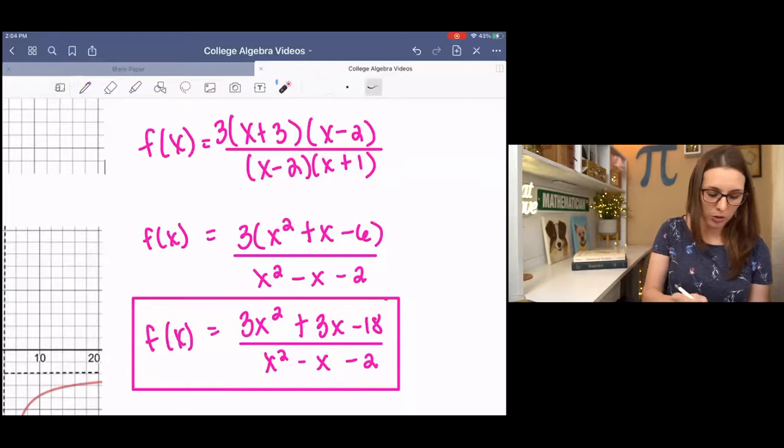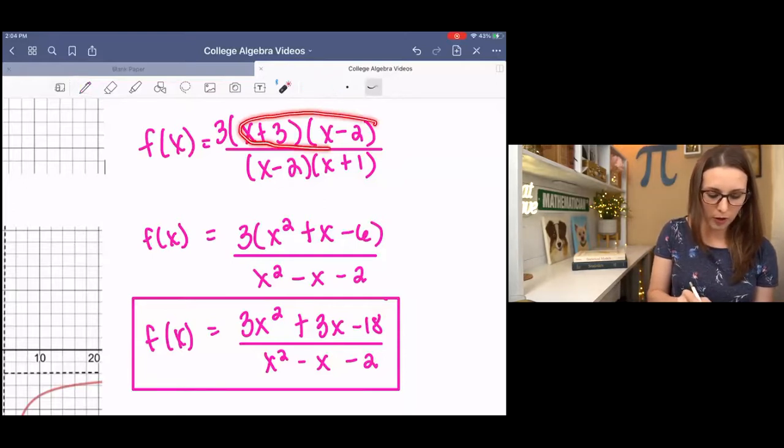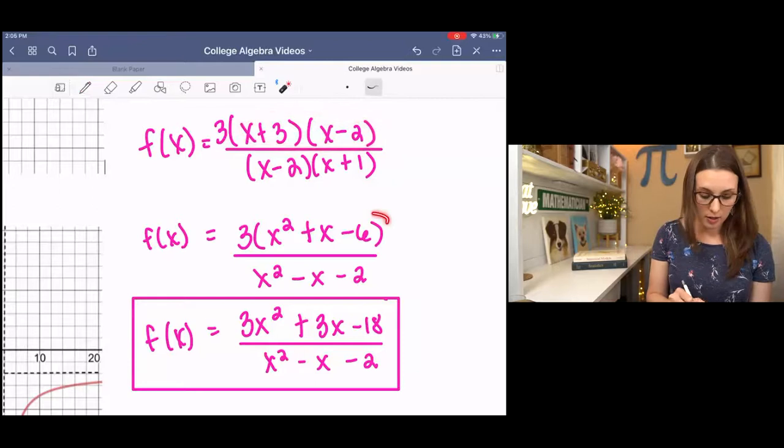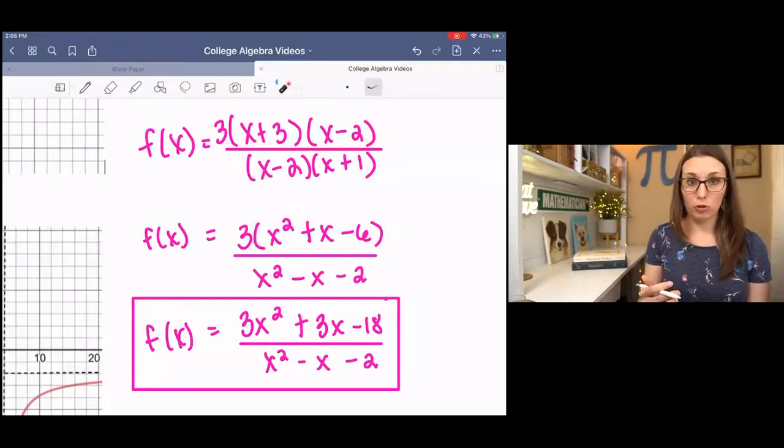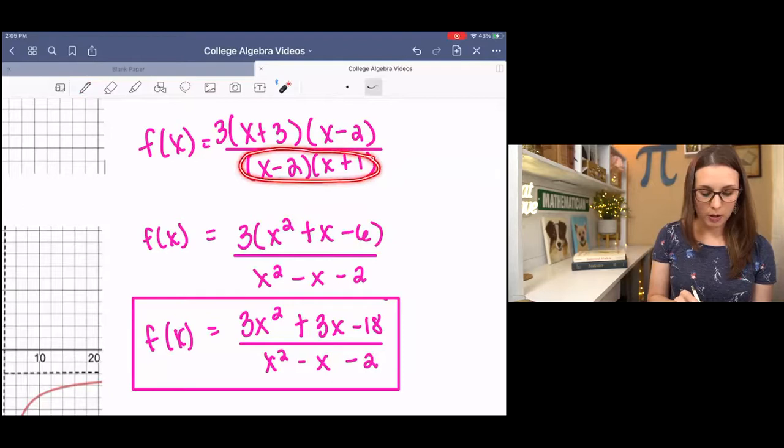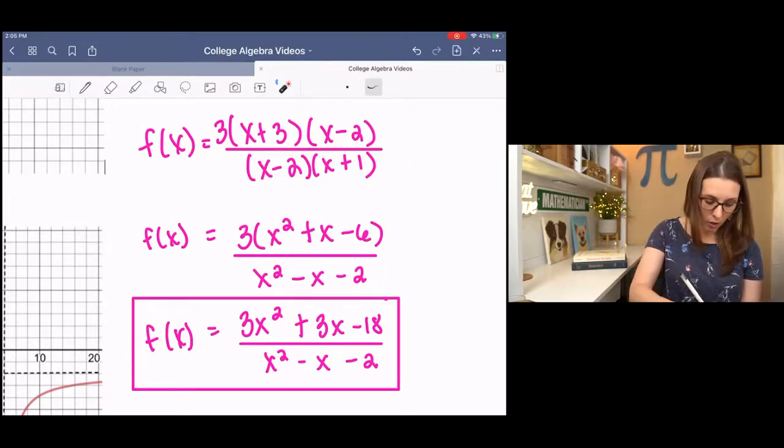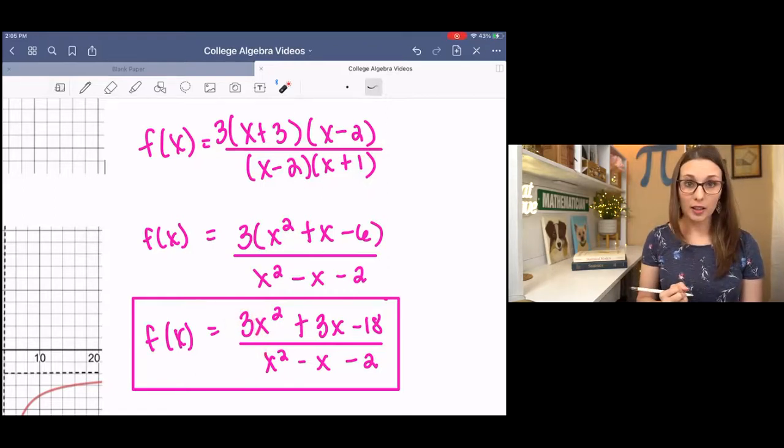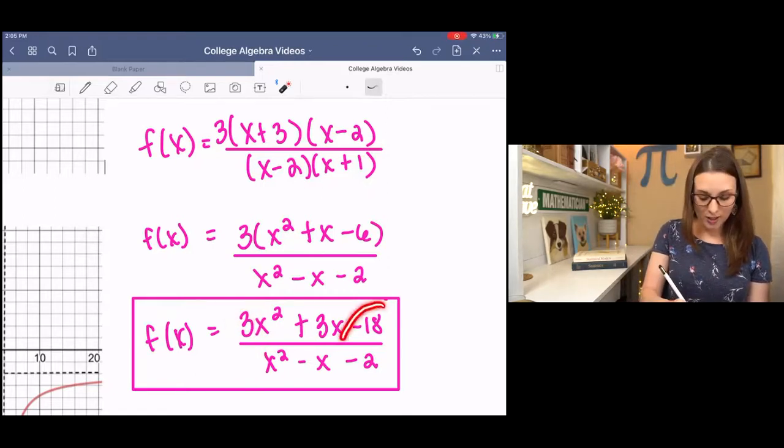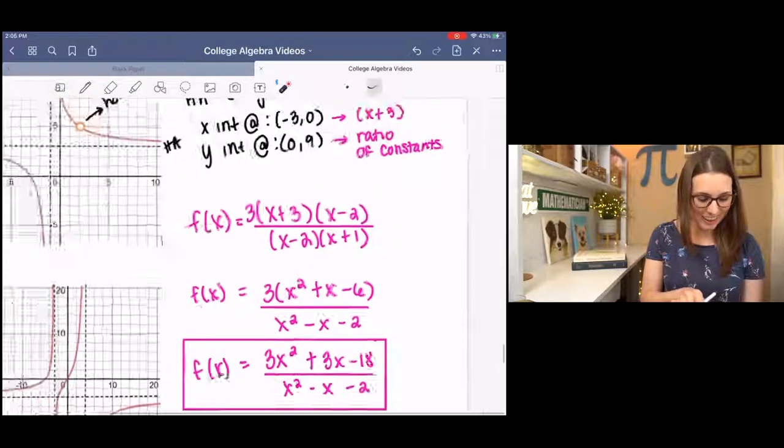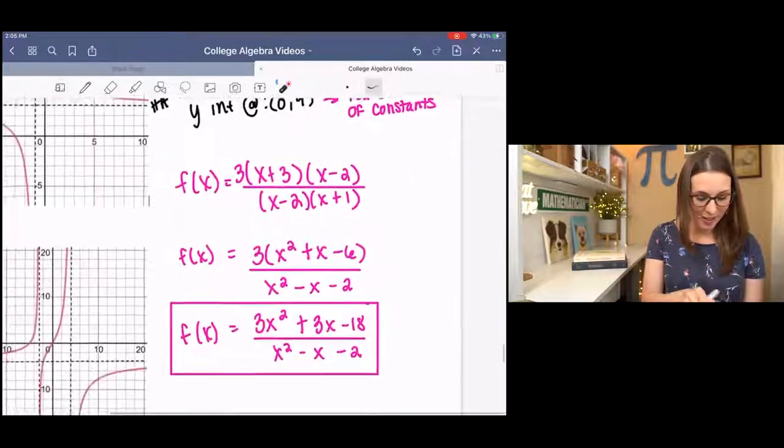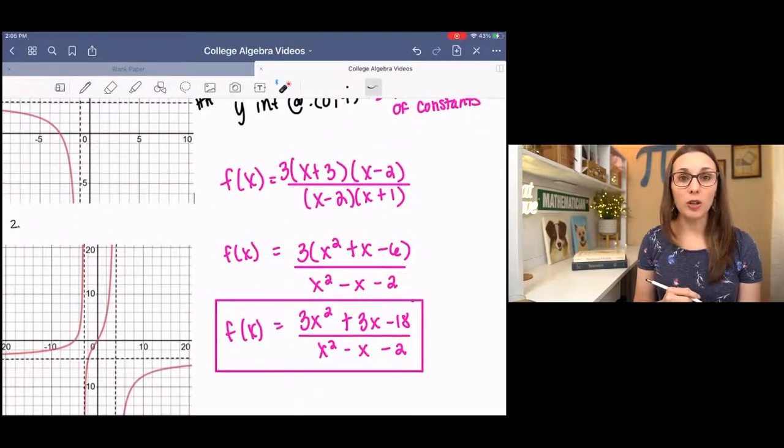If you multiply it out, you will multiply these two factors first and then distribute 3. In the denominator, you'll multiply these two factors. And what you'll find is a confirmation of some of the details that we saw from the graph. We had a horizontal asymptote at 3 and we had a y-intercept at 9. Isn't that so cool? That's all I have for writing equations of rational functions. I hope you enjoyed it. If you have any questions, please let me know and I'd be happy to help.